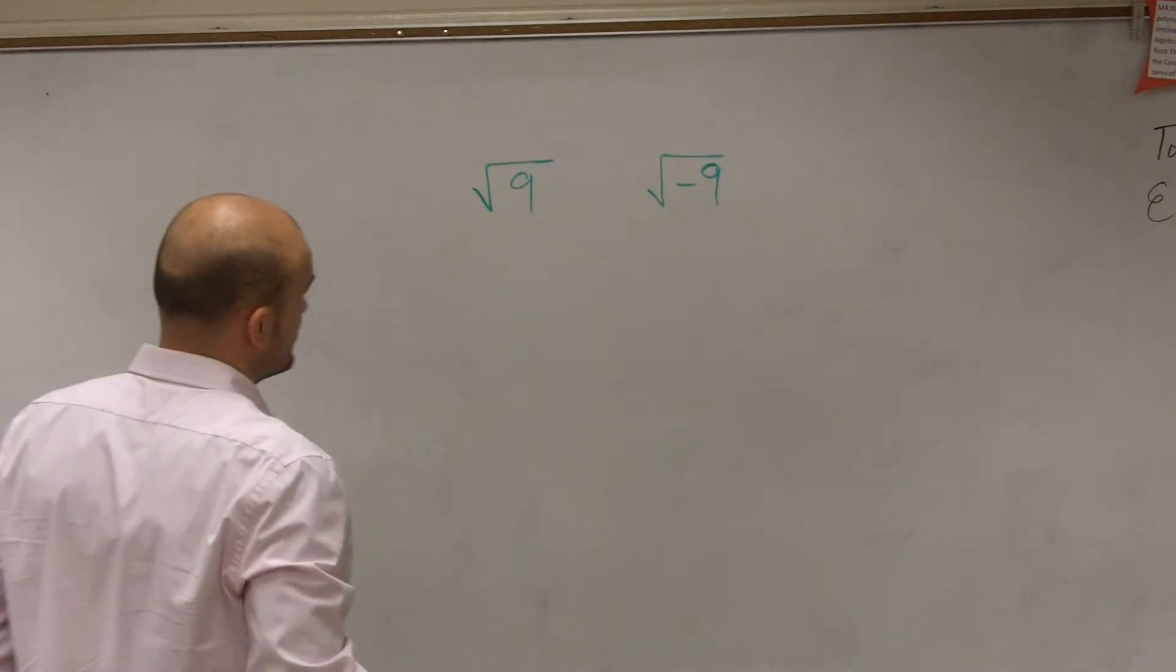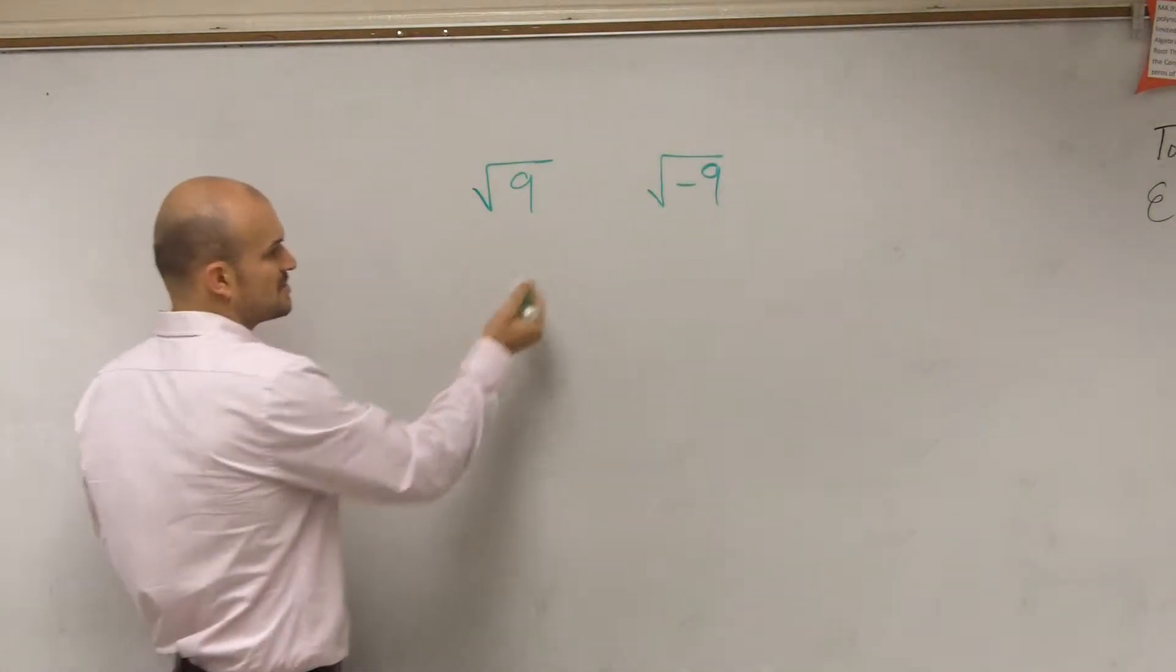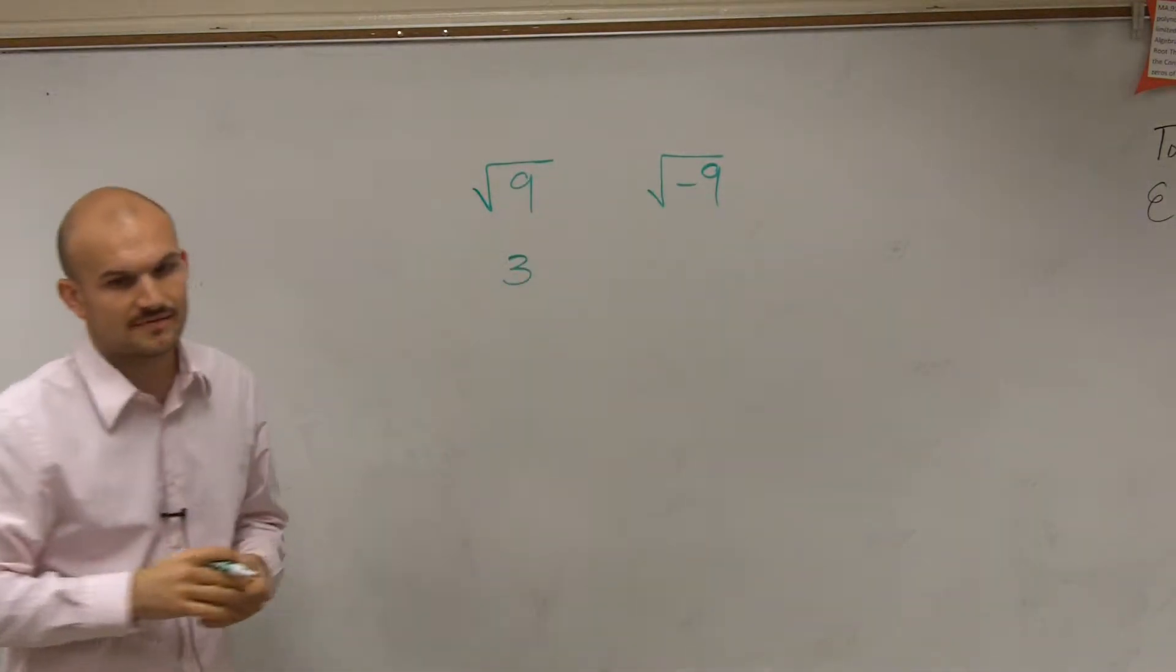So let's say if I want to take the square root of 9 and the square root of negative 9. A lot of miscommunication assumptions say, oh, the square root of 9, right, that's going to be positive 3.